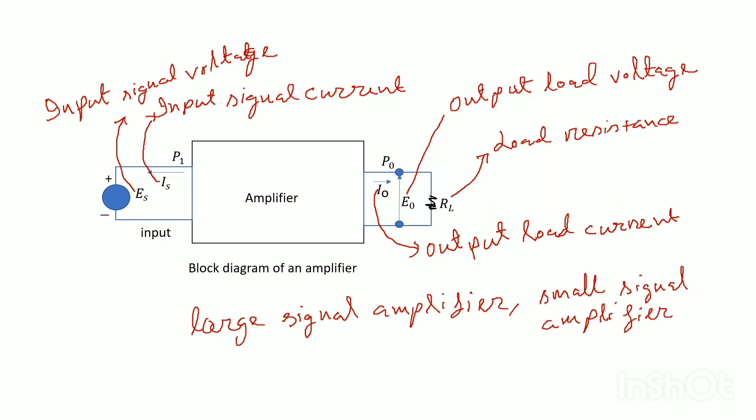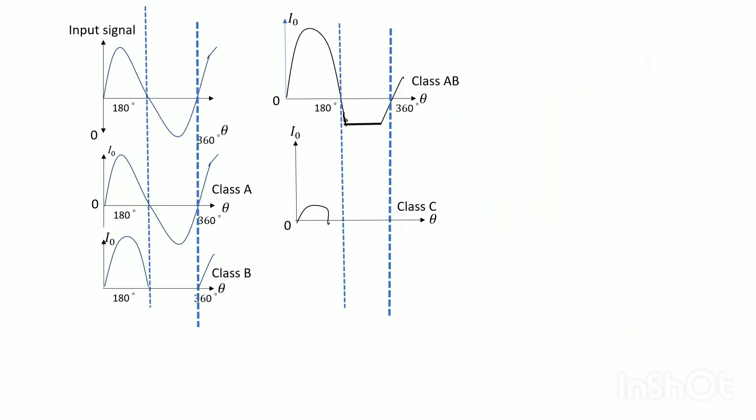Amplifiers are also classified in terms of load current flow. My next topic will discuss the cycle, a sine wave input signal to an amplifier. If the load current also flows for 360 degrees, as indicated in the diagram.